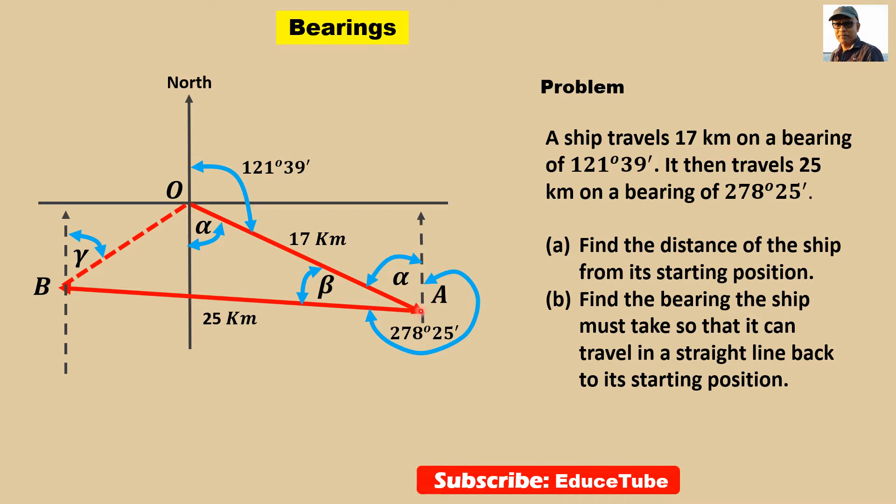Now from this point A, again, it travels 25 kilometers on a bearing of - from this vertical line, the north parallel to this north line. So our reference will be from this point and in clockwise, 278 degrees 25 minutes. So bearing of this AB, and distance is 25 kilometers. So ship is here now.